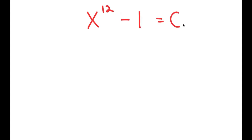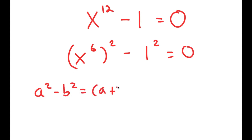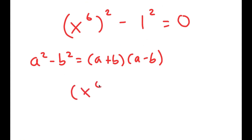In this video, I'm going to solve the equation x to the power of 12 minus 1 is equal to 0. To solve this, I'm going to first rewrite this as x to the power of 6, squared, minus 1 squared is equal to 0. The reason I'm doing this is so I can use the property a squared minus b squared equals a plus b times a minus b. So this turns into x to the power of 6 plus 1 times x to the power of 6 minus 1 is equal to 0.